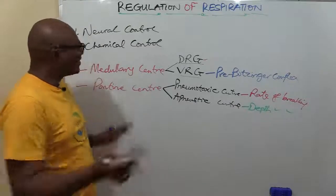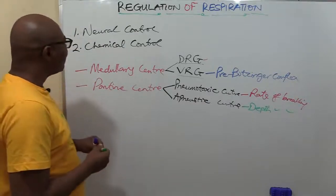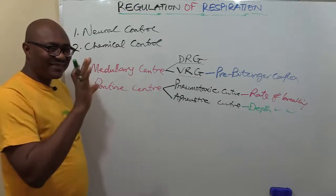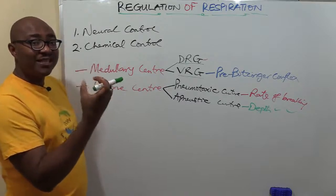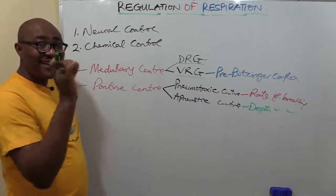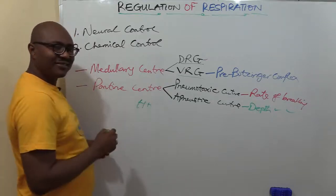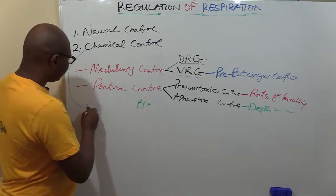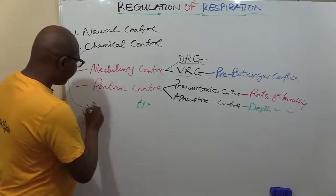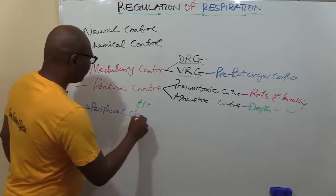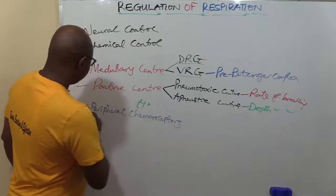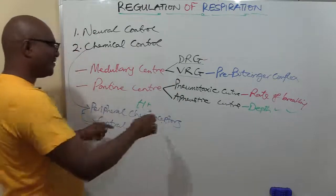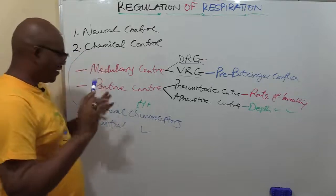Now, the chemical control of respiration — which works hand-in-hand with neural control. Chemical control involves chemoreceptors located in certain parts of the body that can sense oxygen levels, CO₂ levels, and even hydrogen ion levels. There are two types of chemoreceptors: peripheral chemoreceptors and central chemoreceptors located in the medulla of the brain.